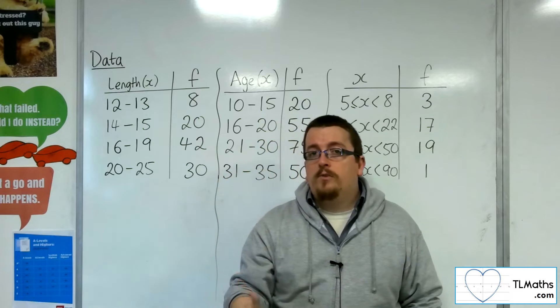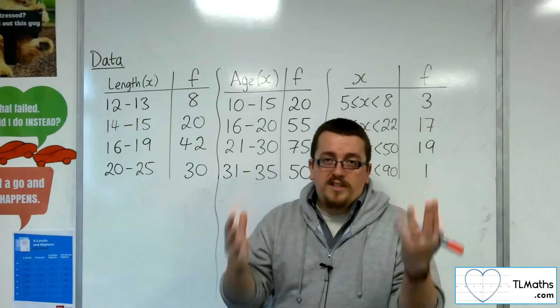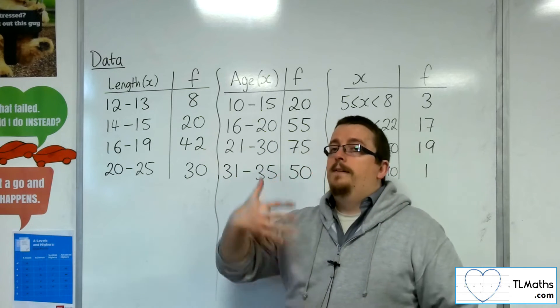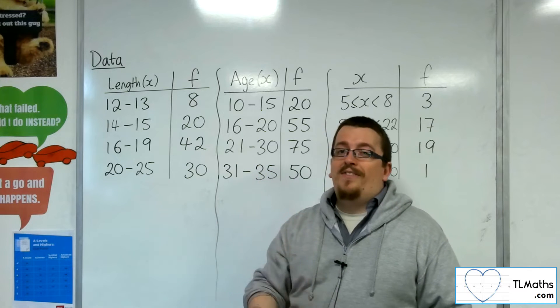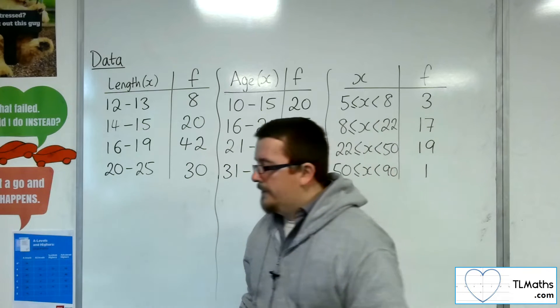So when you're working with grouped frequency, just take the frequency, halve it, the total frequency, halve it, and take that as the position for the median.